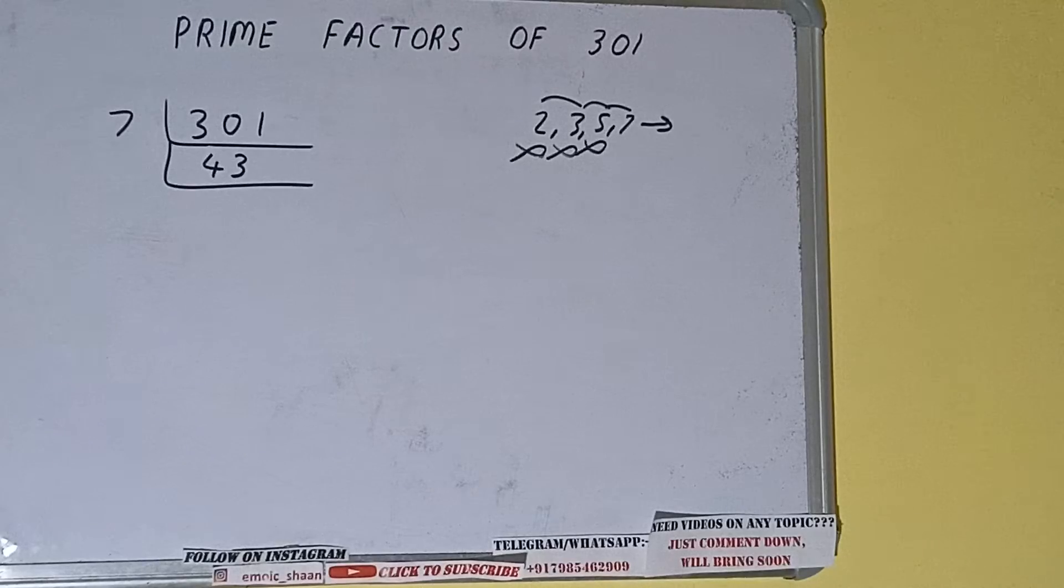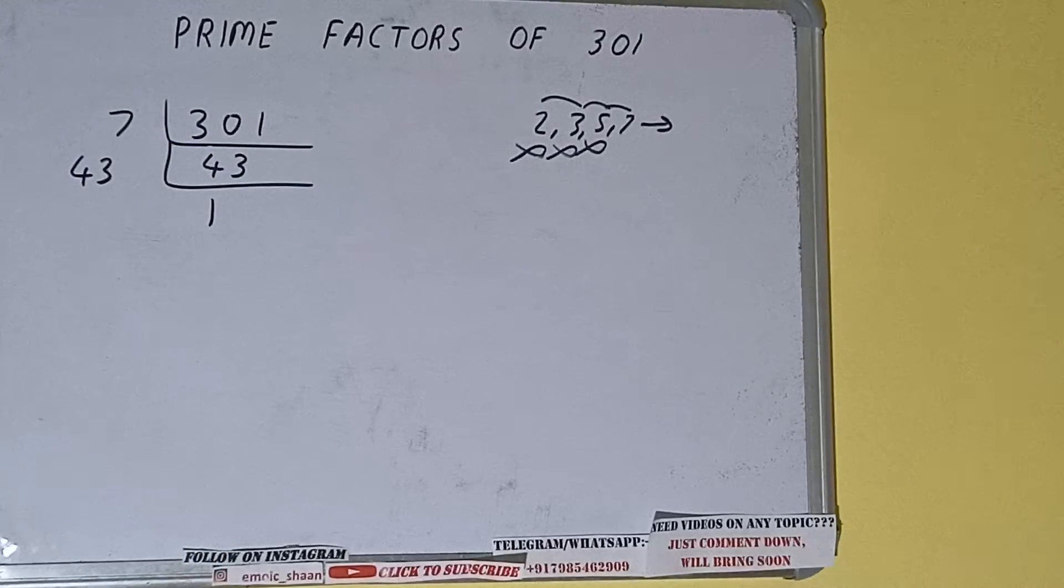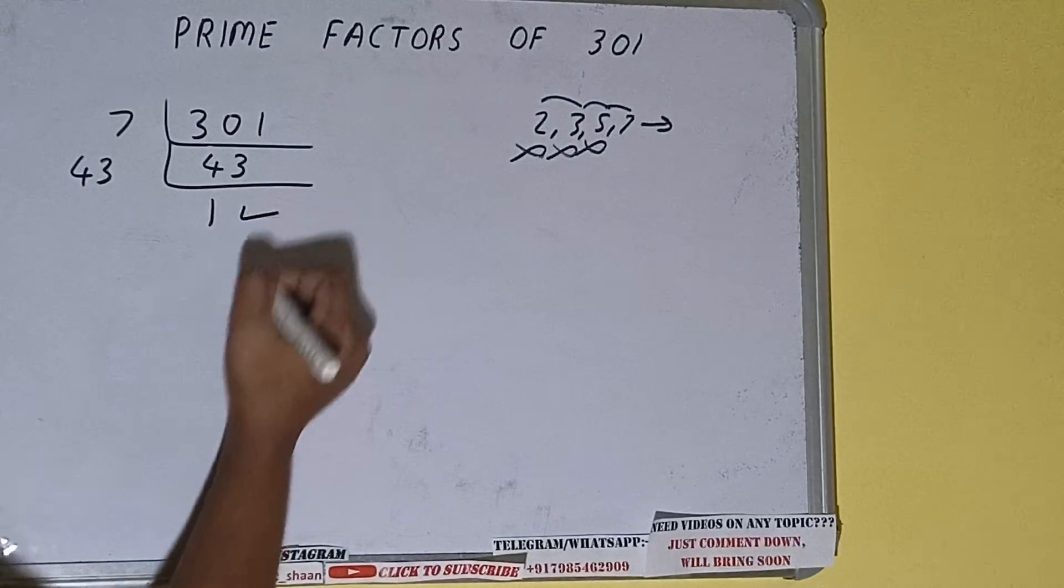So it is only divisible by itself, that is 43. And once we do so, we'll be getting 1. Once we get 1, we need to stop and do one last thing.